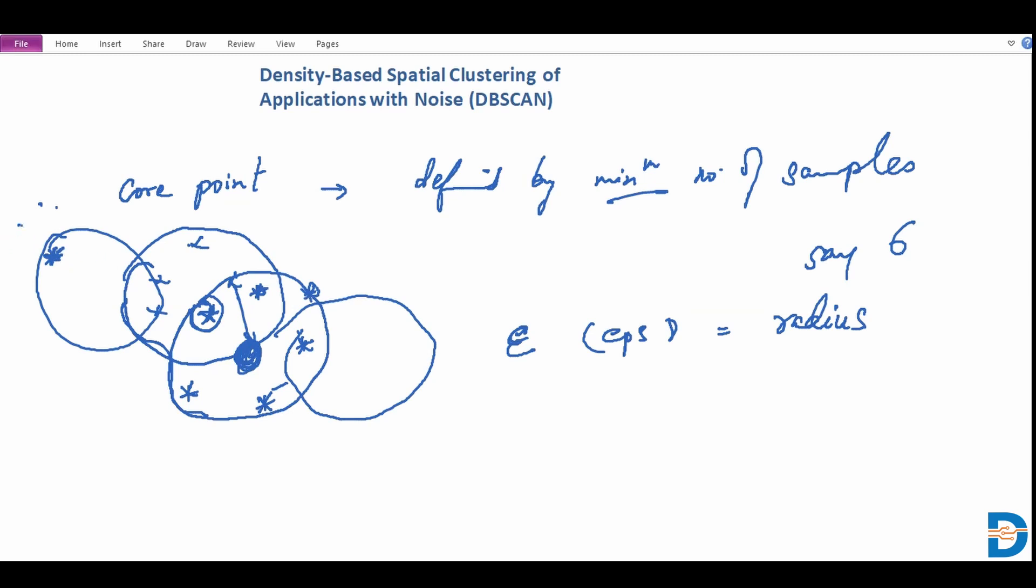So what we could do is now, if this happens to be in that given radius of an existing core point, it gets included in the cluster. It, however, does not allow us to expand anymore. We will not be expanding because this itself is not a core point. So that's where we stop.